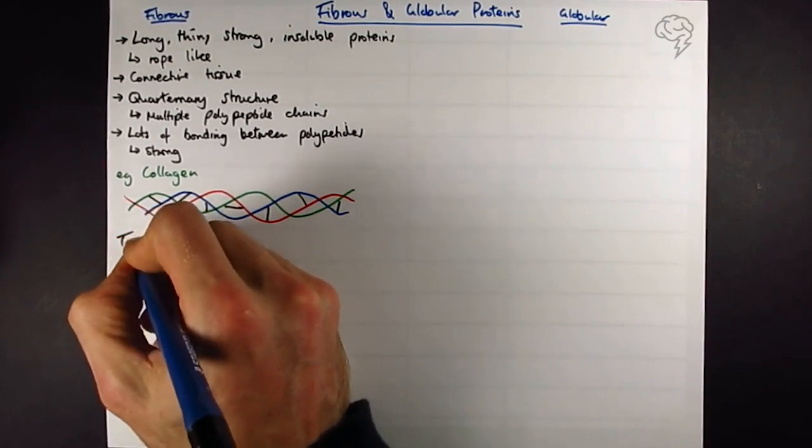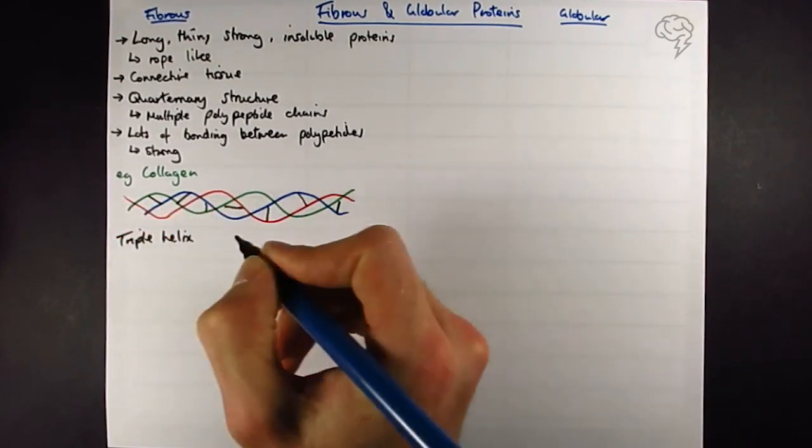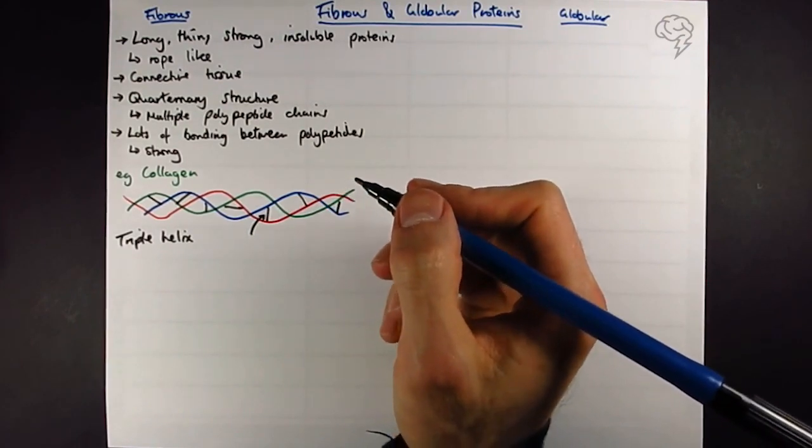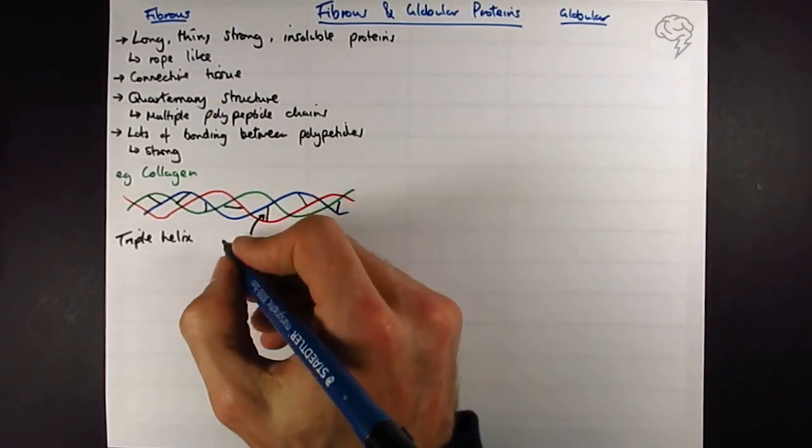This is a triple helix. We've got bonds between the polypeptide chains. These are going to be strong bonds like disulfide bridges or covalent bonds.